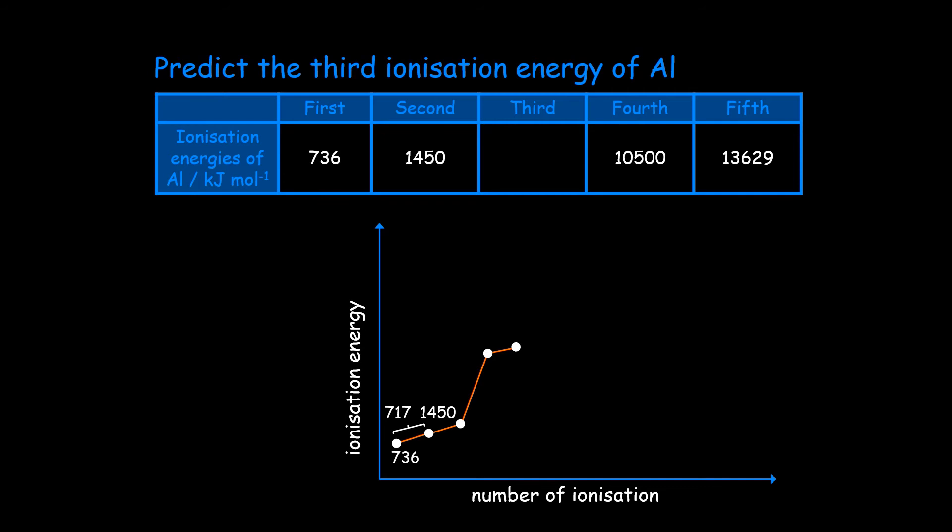So there should be a difference between the second ionization energy and the third ionization energy by 717 as well. So it's going to be 1,450 plus 717 gives you 2,164.